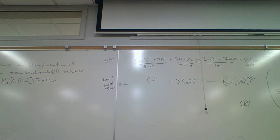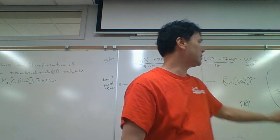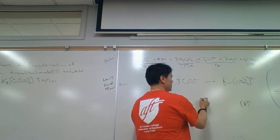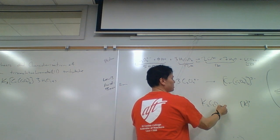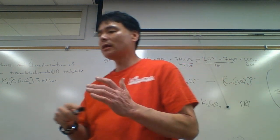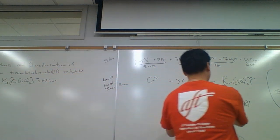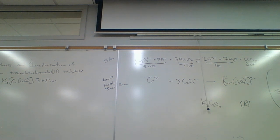So what I want to do is precipitate out the complex but leave the potassium oxalate in solution. Now how am I going to manage that? It turns out I'm going to take advantage of a difference in solubility. Potassium oxalate is much more soluble in ethanol than this complex. So what I'm going to do is change the solvent — rather than using water, I'm going to change it to ethanol.